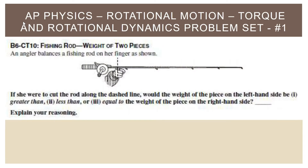The first one here in the rotational motion, torque and rotational dynamics problem set is number one on the page. These are all from the Tipper's book. This is B6CT10 — fishing rod, weight of two pieces. It says an angler, which is really just an old-timey word for fisher, balances a fishing rod on her finger as shown. If she were to cut the rod along the dashed line, would the weight of the piece on the left-hand side be greater than, less than, or equal to the weight of the piece on the right-hand side? Explain your reasoning.